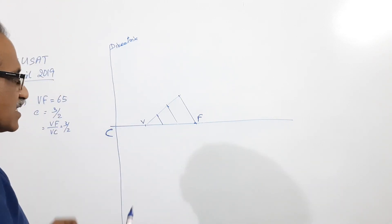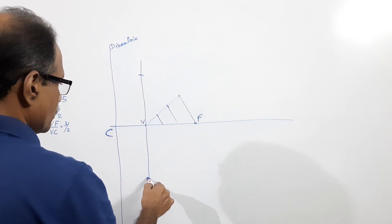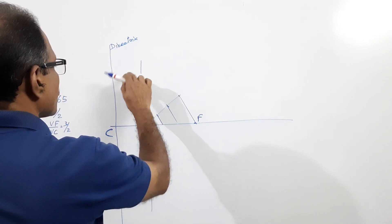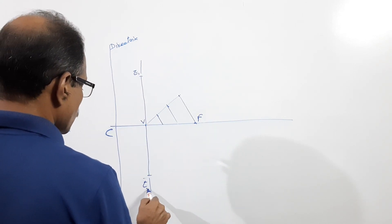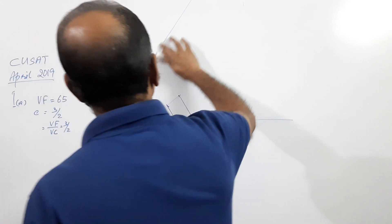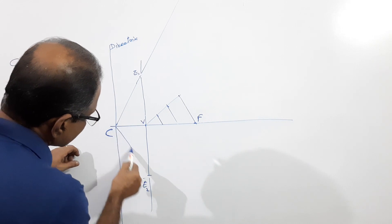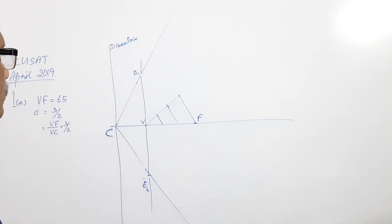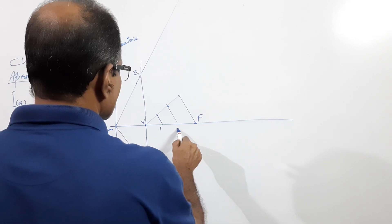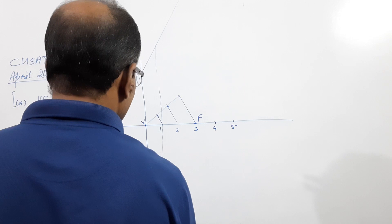Draw a vertical line through C — this is the directrix. This is the focus, this is the vertex, this is the directrix. Now draw a vertical line at V. With V as center and VF as radius, cut arcs up and down — call these E1 and E2. Join C to E1 and extend; join C to E2 and extend. Mark minimum 5 points: 1, 2, 3, 4, 5. Draw vertical lines through points 1, 2, 3.